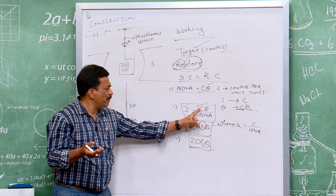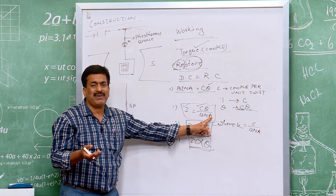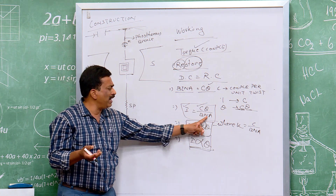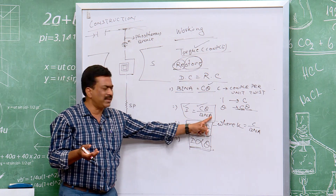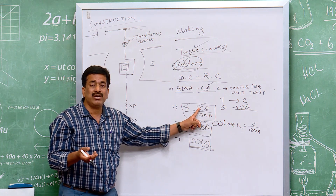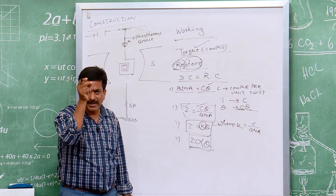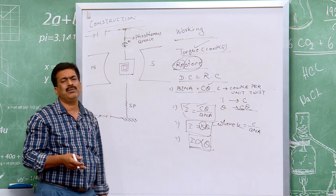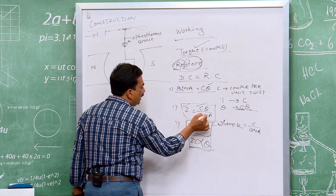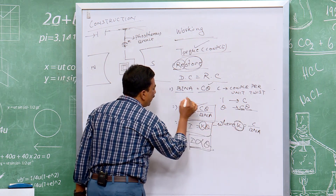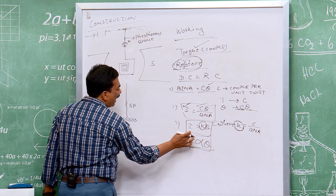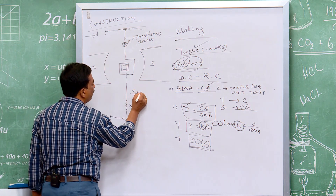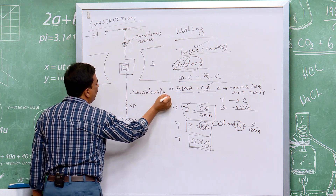By controlling the factor K (i.e., C, B, N, and A), we can control the value of current I. If B increases, I decreases for the same deflection; if N increases, I decreases; if A increases, I decreases; if C is smaller (thinner wire), I can be larger. This is how sensitivity is controlled.